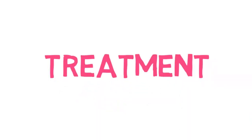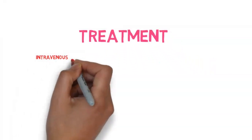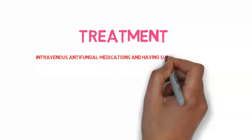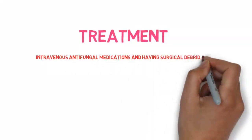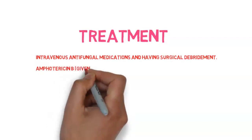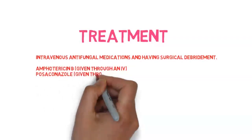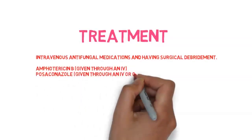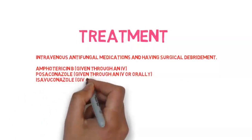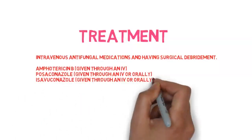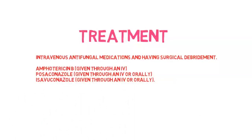This can cause a brain infection, paralysis, pneumonia, seizures, and death. The first steps in treating mucormycosis are receiving intravenous antifungal medications and having surgical debridement. Surgical debridement involves cutting away all infected tissue — removing infected tissue has been shown to prevent the infection from spreading further.